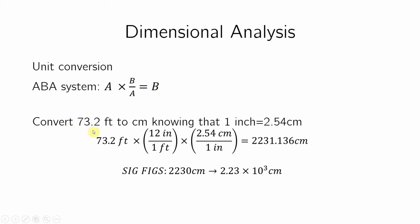I want to convert 73.2 feet to centimeters, and I know that one inch is 2.54 centimeters. How do I do that? I need inches but I have feet. We know that there are 12 inches in a foot. So this is the ABBA system — I don't like feet, I want to get rid of them. I want inches because I know how to go from inches to centimeters.